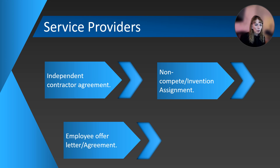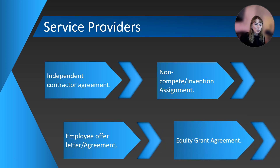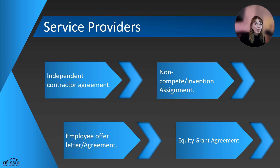Employees will enter into an employment agreement that typically comes in the form of an Employee Offer Letter. This details rate of pay, the term of employment, employee duties, and who they report to, among other things. Along with the Independent Contractor Agreement and Employee Offer Letter, you might also provide your service providers with an equity grant agreement, which would memorialize the number of shares or units they might receive for compensation from your equity incentive plan.